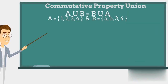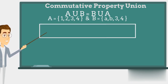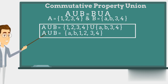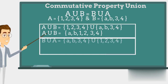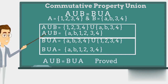To prove the commutative property of union, we need to prove that the result of A union B is equal to B union A. The result of A union B is {A, B, 1, 2, 3, 4}, and the result of B union A is also {A, B, 1, 2, 3, 4}. This proves the commutative property of union of sets.